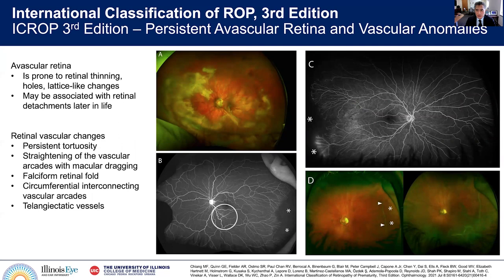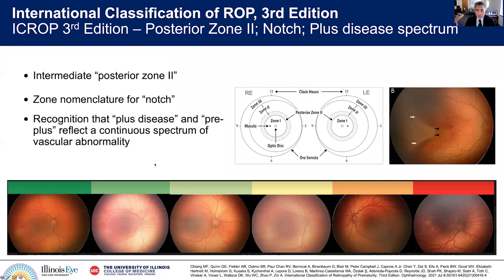Persistent avascular retina and vascular anomalies can occur with or without treatment, and it's very important to describe and document this. Avascular retina can be prone to retinal thinning, lattice-like changes, and may be associated with retinal detachments later in life. After anti-VEGF therapy, you can develop avascular anomalies in the periphery.